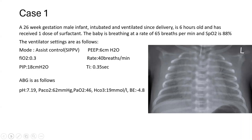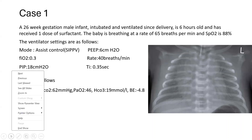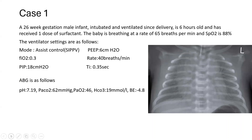What about the blood gas? For the blood gas, the patient has respiratory acidosis and the CO2 is high. I think this was taken from capillary. So probably we're still not ventilating the baby adequately. I would increase the PIP or the rate for this baby. What acidosis is this? Respiratory acidosis.